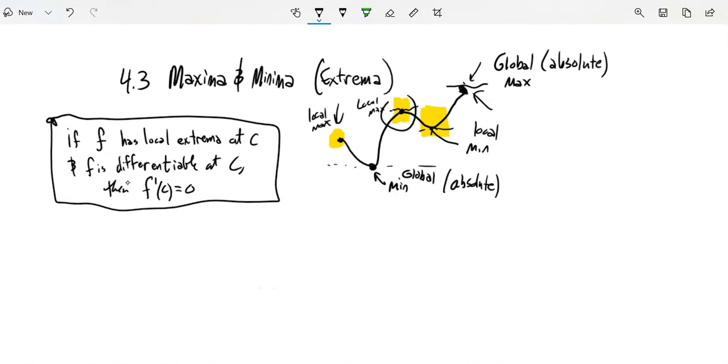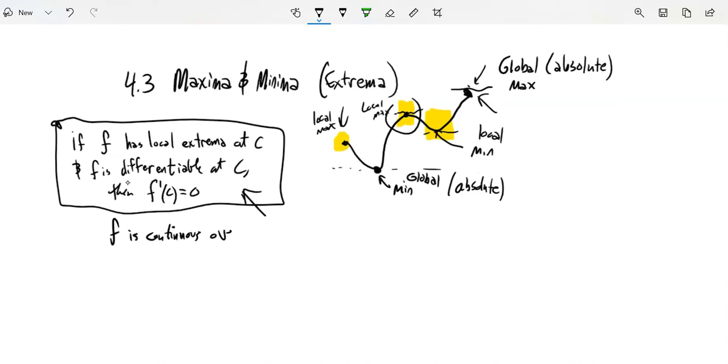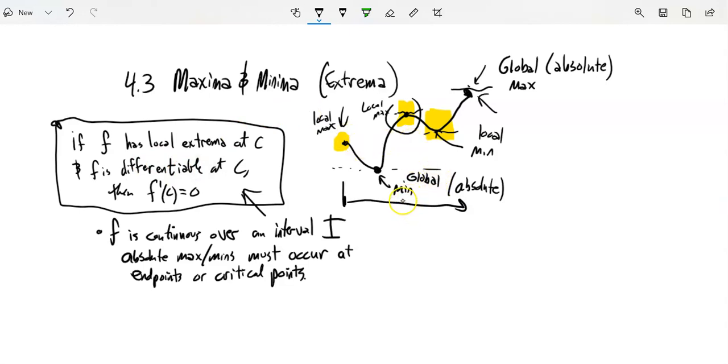So how do we find them? If F is continuous, we're going to assume this function is continuous over some interval. The first claim I'm going to make is that absolute max and mins must occur either at endpoints or at critical points. And critical points are when the derivative is zero or undefined.